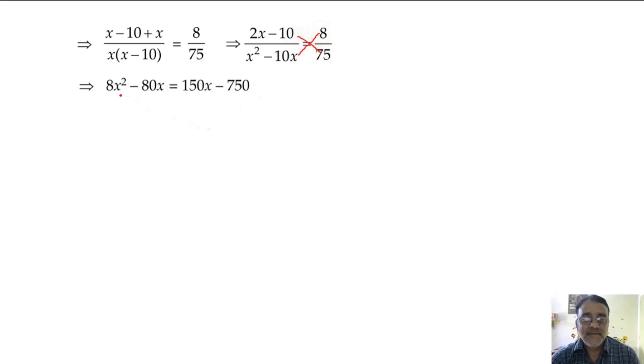The numerator will become 2x minus 10 upon x square minus 10x equals 8 by 75. Now I am doing cross multiplication. 8x square minus 80x equals 150x minus 750. Now shift this to this side.